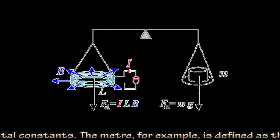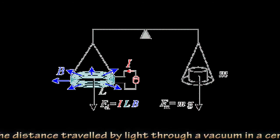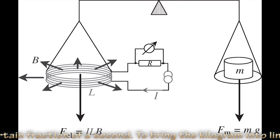The meter, for example, is defined as the distance traveled by light through a vacuum in a certain fraction of a second.